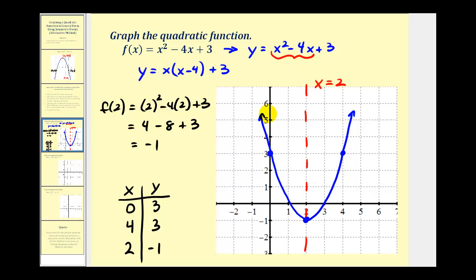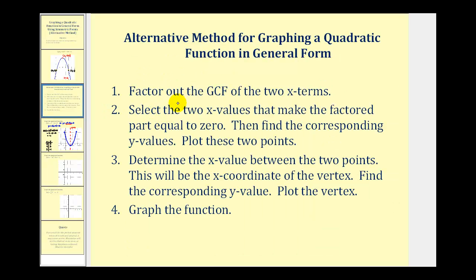Let's formalize these steps. First, factor out the greatest common factor of the two x terms. Then select the x-values that make the factored part equal to zero. Find the corresponding y-values — this gives us the two symmetric points, which we plot. Then determine the x-value midway between the two points to get the equation of the axis of symmetry, which is also the x-coordinate of the vertex. Find the corresponding y-value, plot the vertex, and then graph the function.